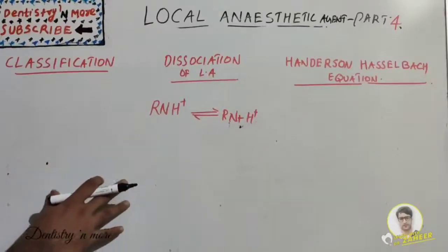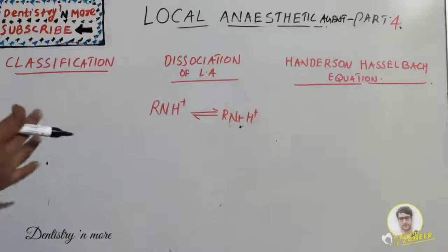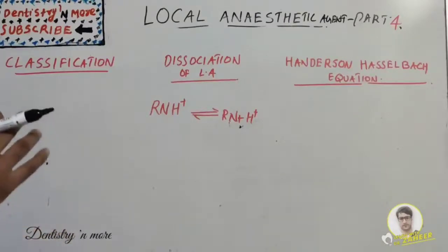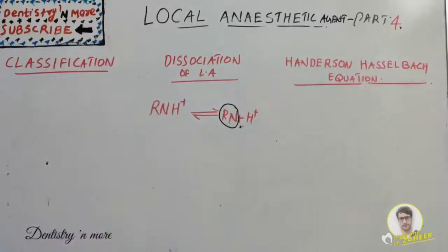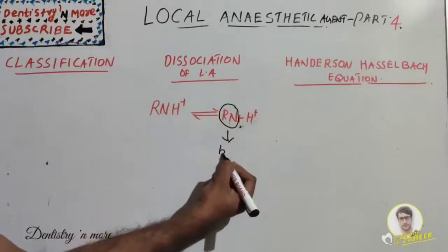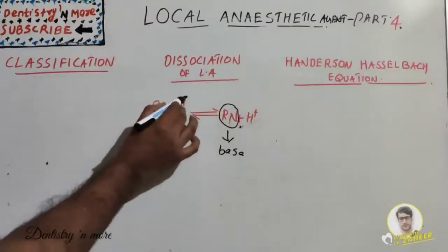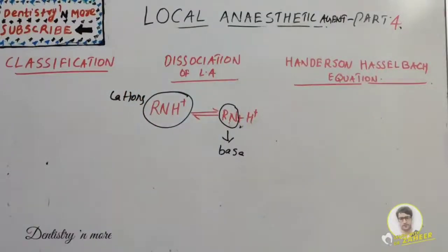Now let's look at dissociation of local anesthetics. Local anesthetics are available as salts — usually hydrochlorides — for clinical use. These salts are both water-soluble and stable, dissolved in sterile water or saline. In solution, the drug exists simultaneously as an unchanged molecule with no charge, called the base, and as a positively charged molecule known as a cation.